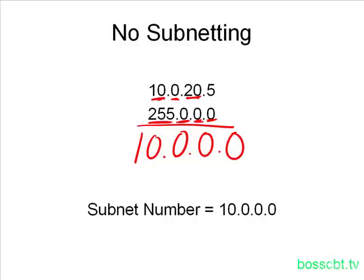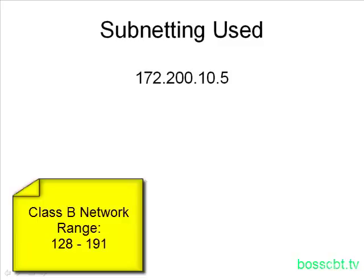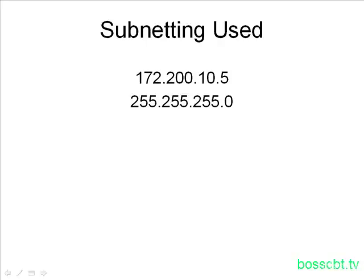Let's look at another example where subnetting is used. Here we have a class B IP address, 172.200.10.5. This is what our subnet mask looks like: 255.255.255.0. We know this has been subnetted because that is not your default class B subnet mask.